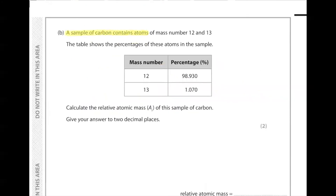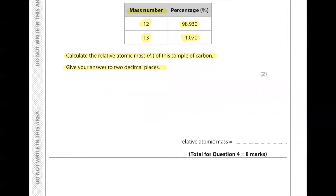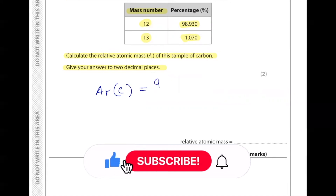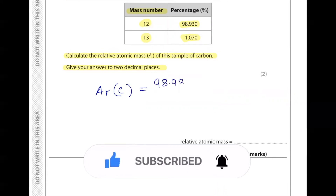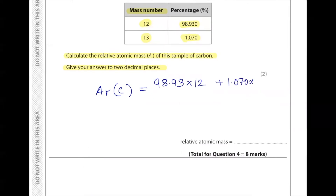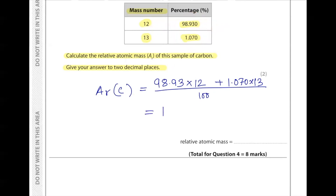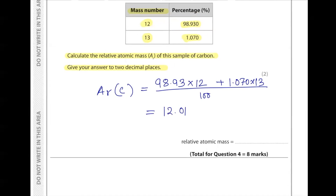Part b: a sample of carbon contains atoms of mass number 12 and 13. Mass number 12 has 98.930% and mass number 13 has 1.070%. Calculate the relative atomic mass (Ar) of the sample to two decimal places. To calculate Ar, multiply the percentage abundance of each isotope by its mass number, then divide by 100 (since the percentages add up to 100). The answer is 12.01, so the relative atomic mass of this carbon sample is 12.01.